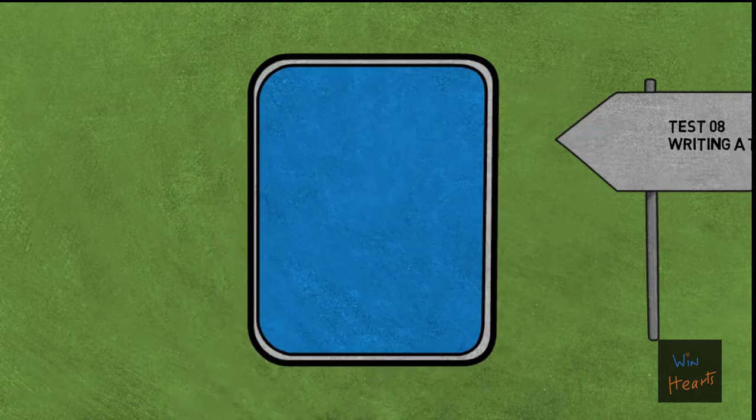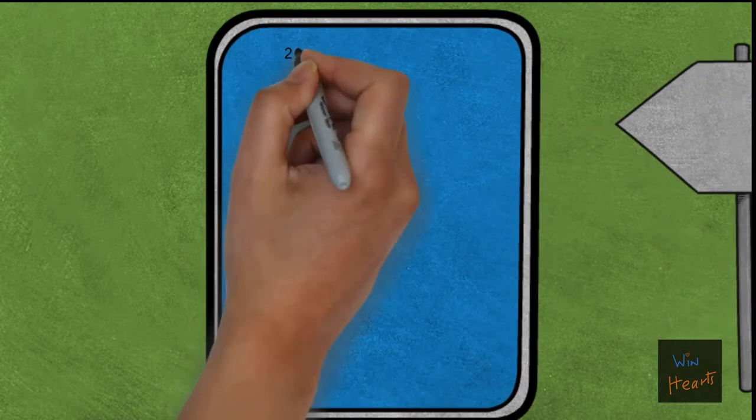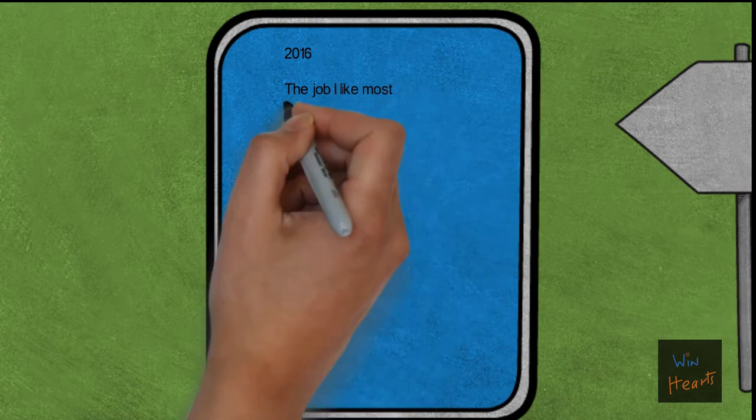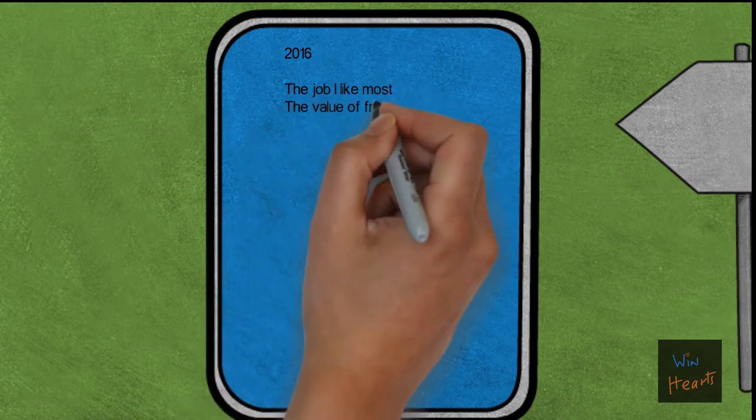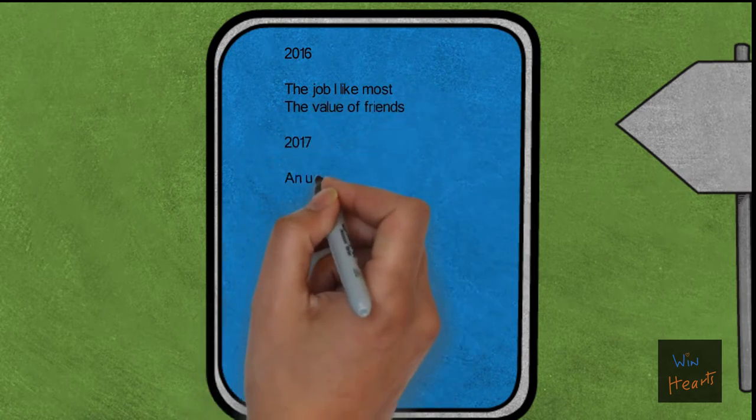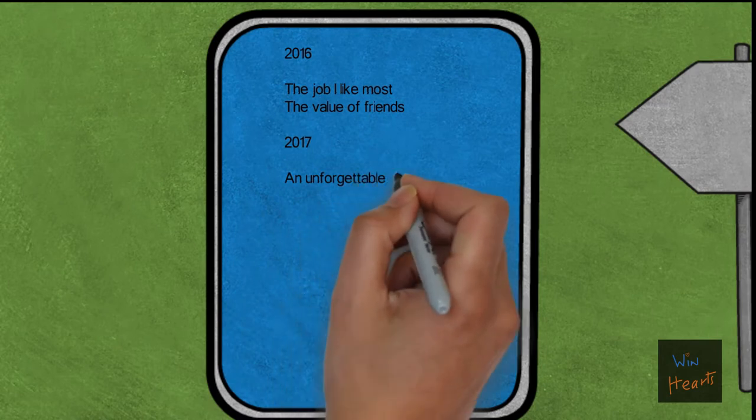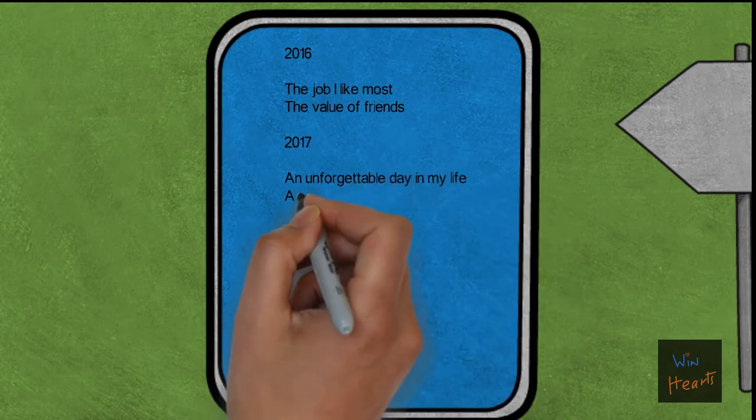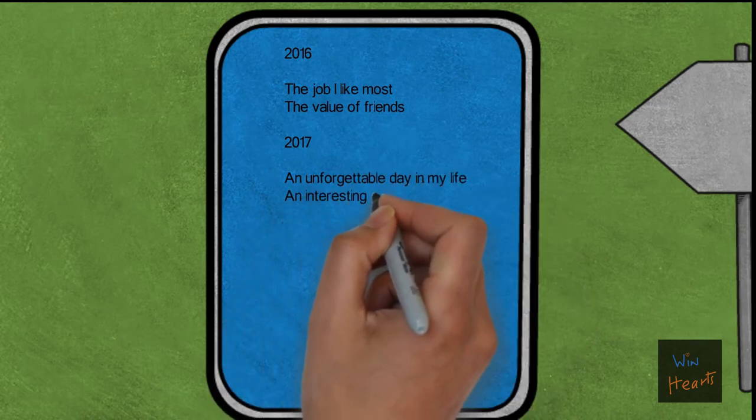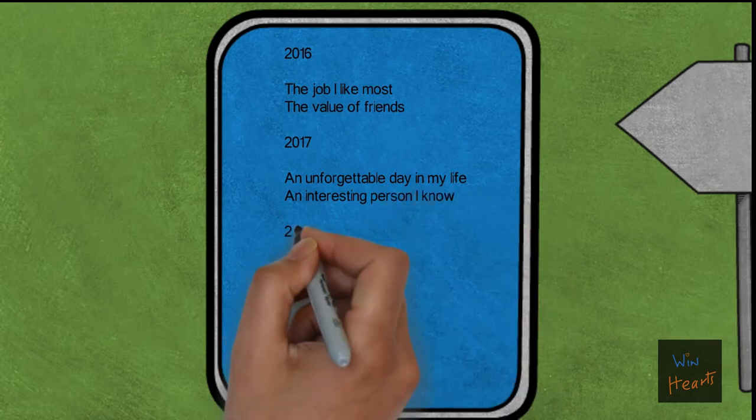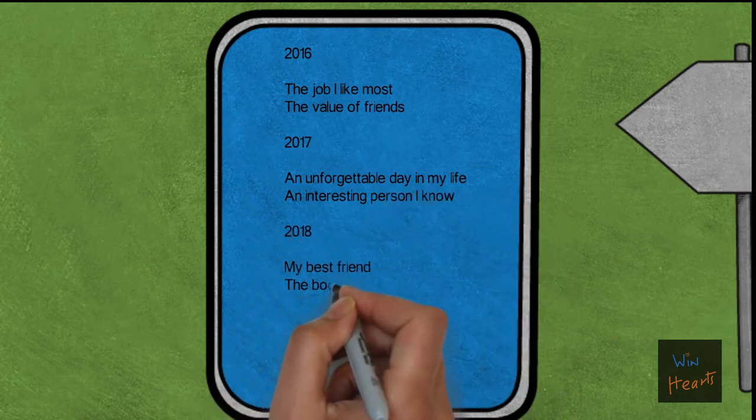If you look at the past papers starting from 2016, 17, 18 and all the way up to 19, you would see they had given you two headings. You had to choose one of those headings and then write your passage, preferably around 50 or 60 words.